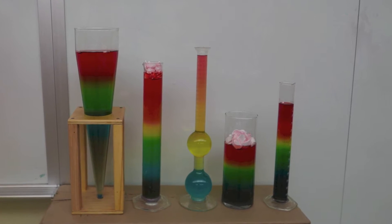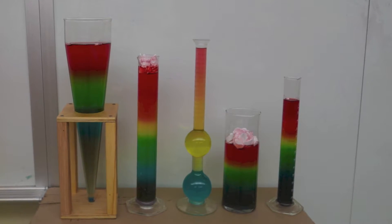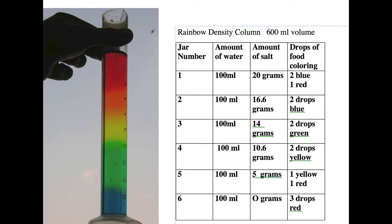The layers are made by dissolving salt into water and then adding food coloring. This table shows the amount of salt that should be dissolved in 100 milliliters of water and then the corresponding drops that should be added to it.